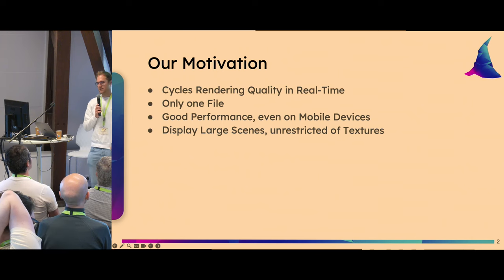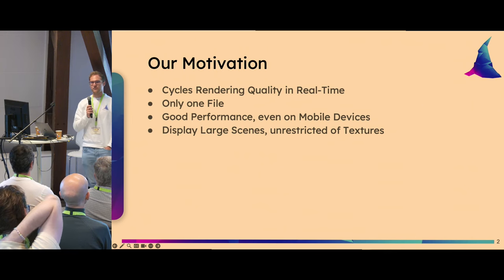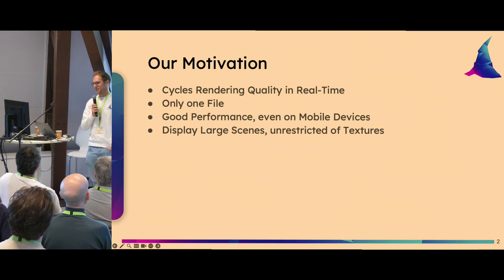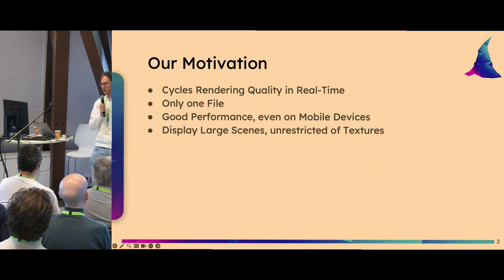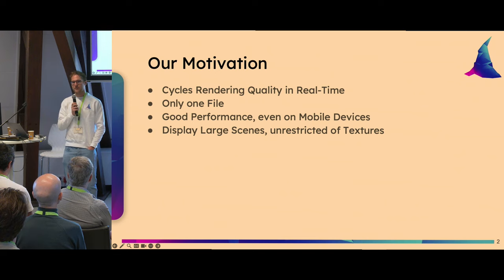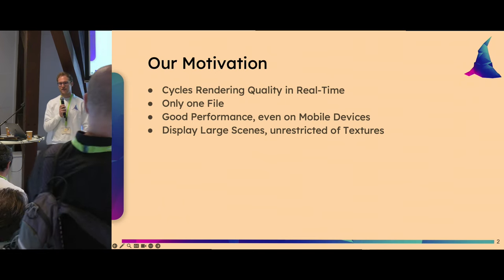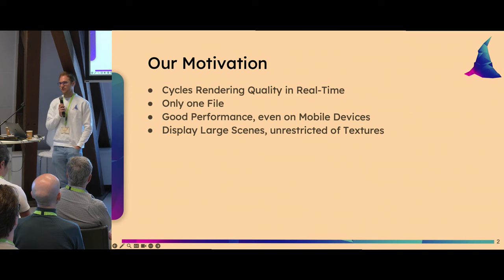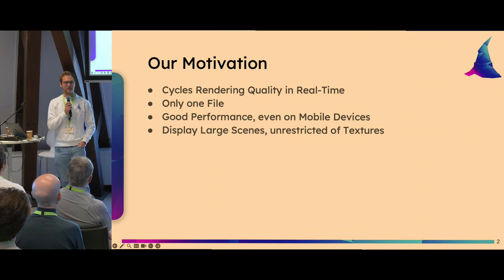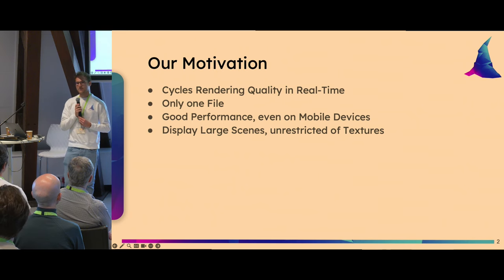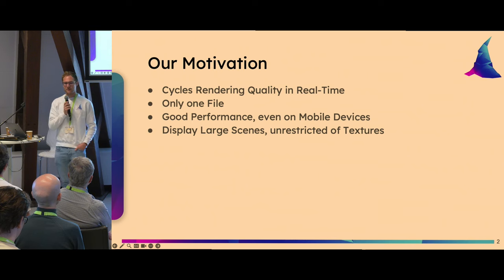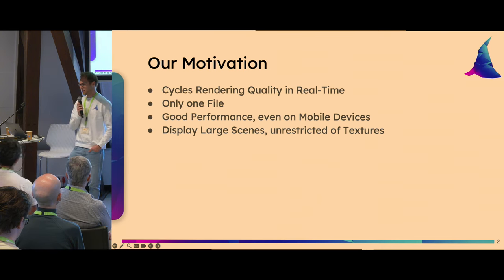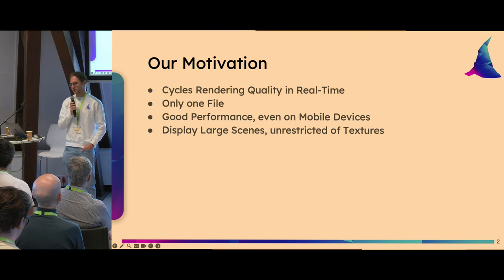Why would we even want our Blender scenes as a Gaussian Splat or radiance field? Why not just export them the normal way and upload to Sketchfab or another 3D online viewer? If you want to export your Blender file and keep all the beautiful lights and shadows you spent hours creating — and maybe even reflections on reflecting surfaces — you have to bake them into multiple texture sets or light maps. For large scenes this can get quite confusing, and for reflecting surfaces, glass, or semi-transparent materials, results can look quite different from what you created in Cycles.